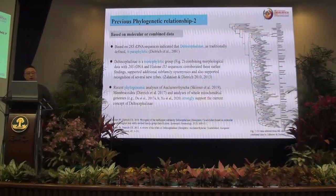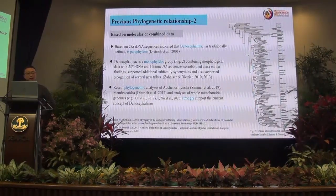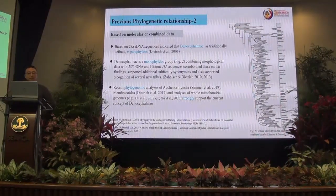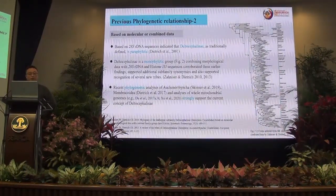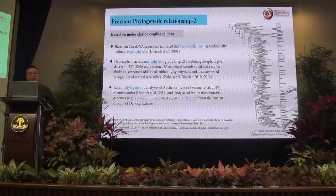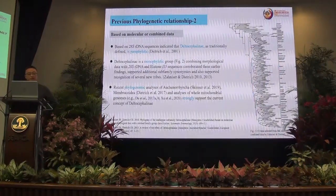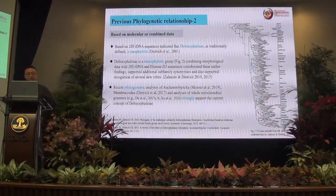Based on the molecular and combined data, which is from 2001, analysis based on 28S rDNA sequencing indicates Deltocephalinae is paraphyletic. Combined morphological data with molecular data, these two genes, according to earlier findings, supported additional superfamily relationships and also supported recognition of seven new tribes.